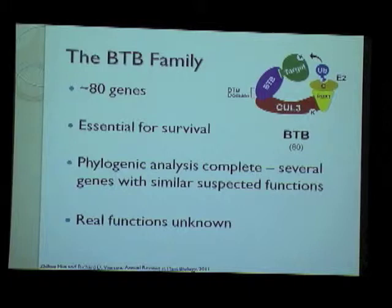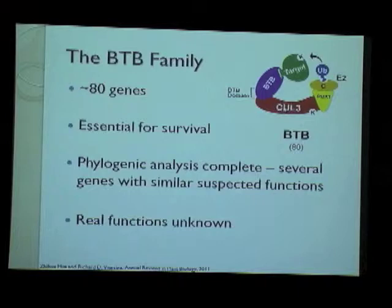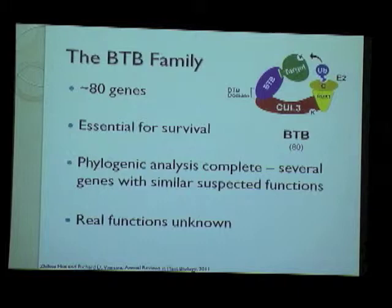The BTB family is a subfamily of E3 ligases consisting of about 80 genes and is essential for survival. The BTB functions as a scaffold along with cullin3 — either of two isoforms, cullin3a or cullin3b — and the E2, to transfer ubiquitin to the target. When a double mutant was made with both cullins knocked out, none of the plants ever survived, leading to the conclusion that BTB E3 ligases are critical for plant survival.